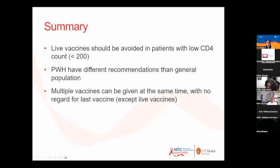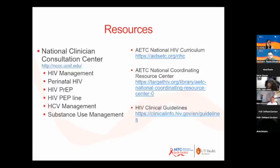In summary: live vaccines should be avoided with low CD4 counts; people with HIV have different immunization recommendations, so be mindful of that. The ACIP chart is a useful resource to have handy. Multiple vaccines can be given at the same time with no concern, except for live vaccines.